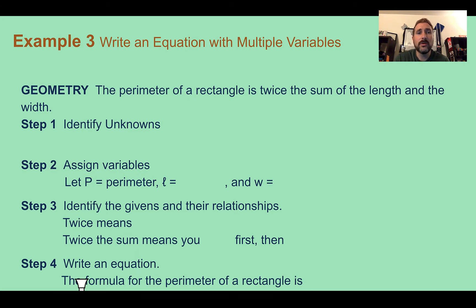Example three, write an equation with multiple variables. Here, they broke it down. Step one and step two are the same as step one. They just broke it down further. But we're following the same process. So our real context here is geometry.